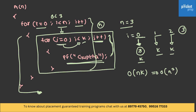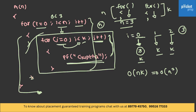Instead of loops being nested, suppose you have two loops separately — one loop followed by another loop in the same function. The first loop executes n times and the second loop executes k times. The complexity in this case will be O(n + k). You multiply the complexities when loops are nested, or you perform addition when loops are executed separately.